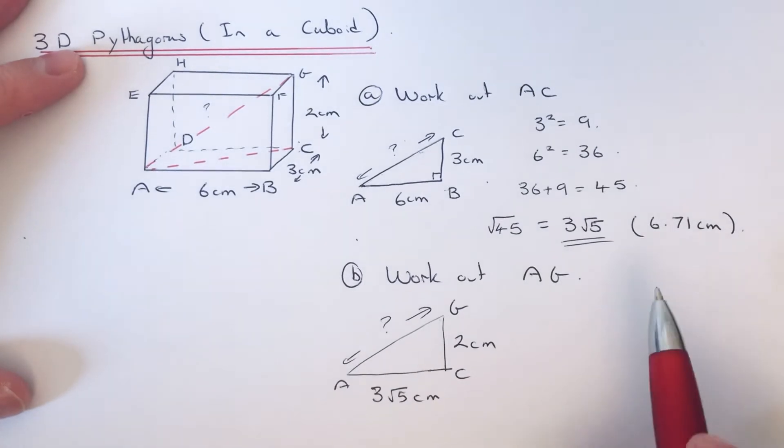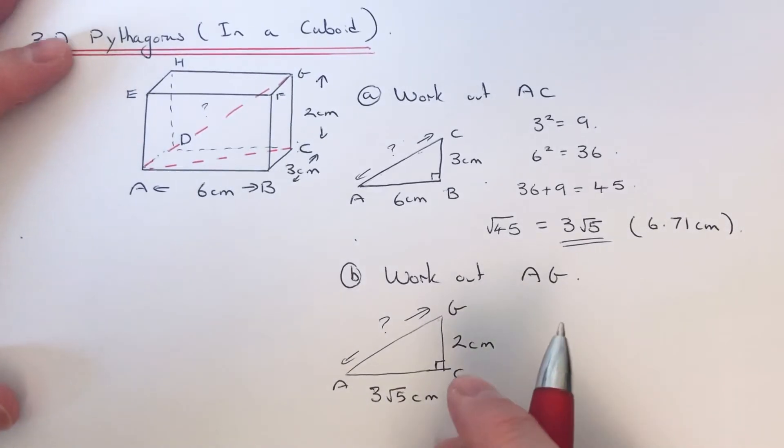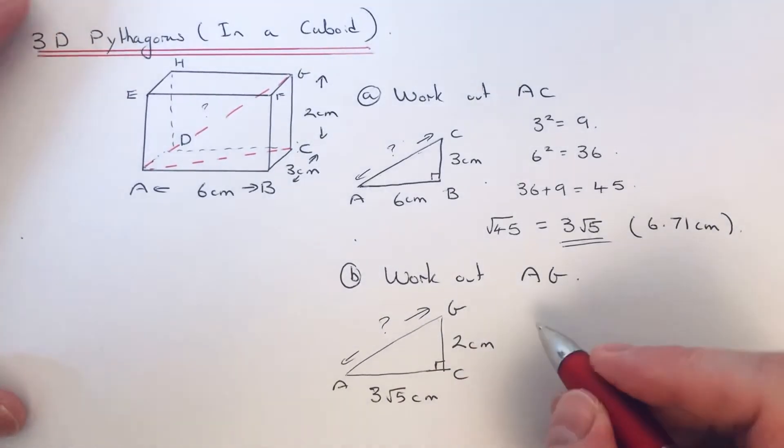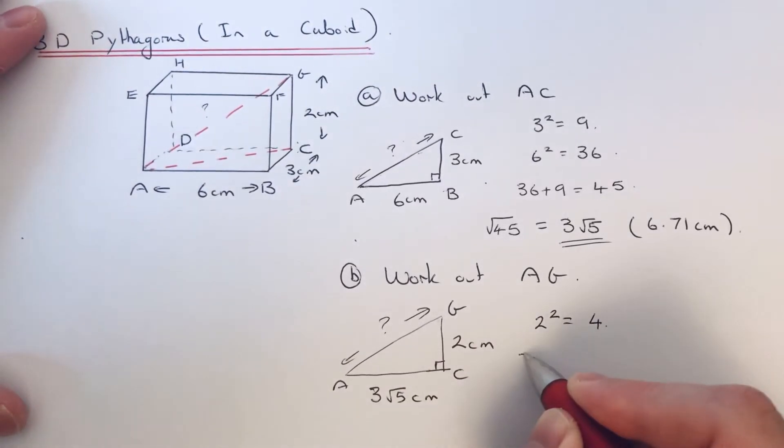So again it's going to be Pythagoras because we've got the two sides, it's a right-angle triangle, and we need the third side. So we square our sides: 2 squared is 4. 3√5, we've got to square it. If you use a calculator, make sure you put it in a bracket.